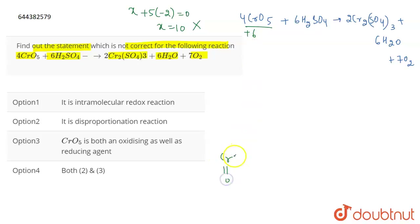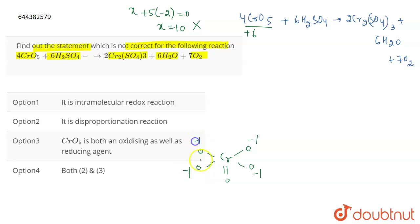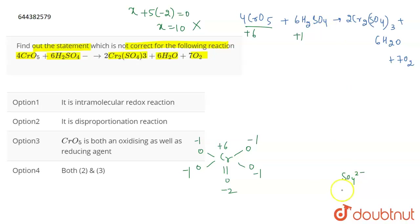Chromium actually has an oxidation state of +6 in CrO5 because of its structure: it has one double-bonded O and four single-bonded O atoms. The four single-bonded oxygens each have a −1 valency, and the double-bonded O has a −2 charge, giving chromium a +6 charge. In H2SO4, hydrogen is +1 and SO4²⁻ gives sulfur a +6 oxidation state (x + 4×(−2) = −2).